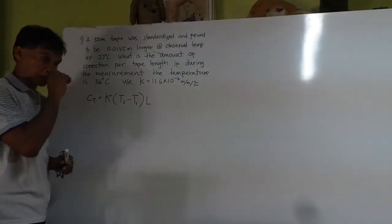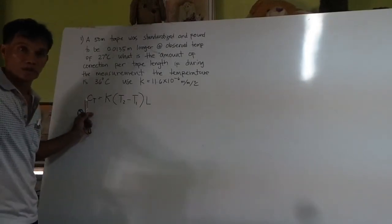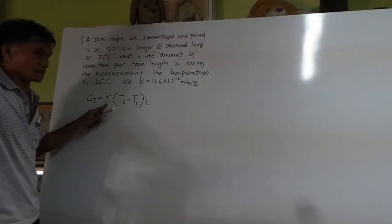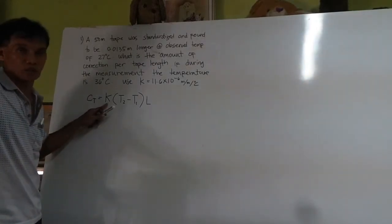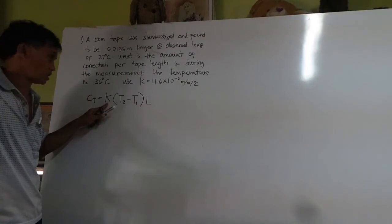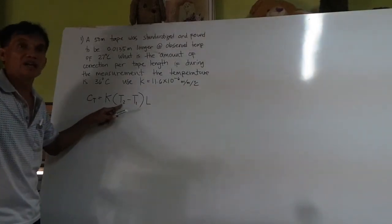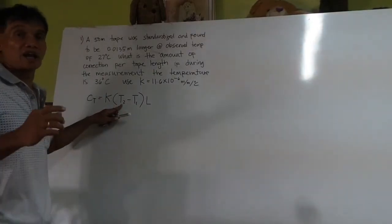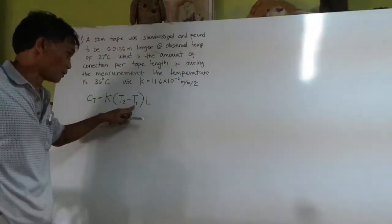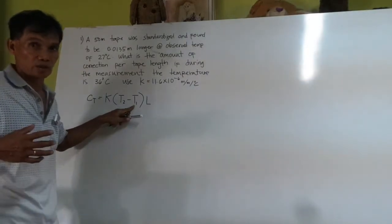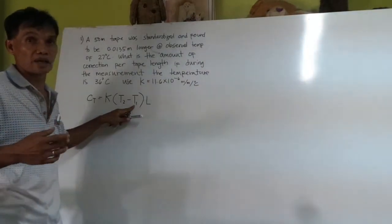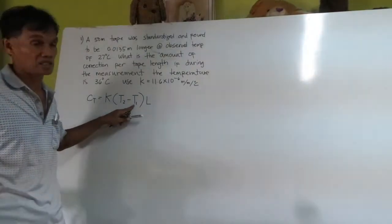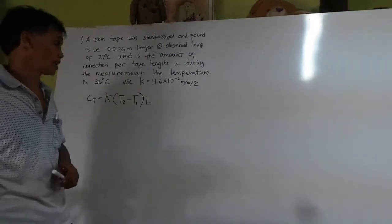This is the formula to determine the correction of the tape. The K is the coefficient of expansion of the tape due to the change in the temperature. T2 is the temperature during the taping works. Initial temperature is stated by the manufacturers.